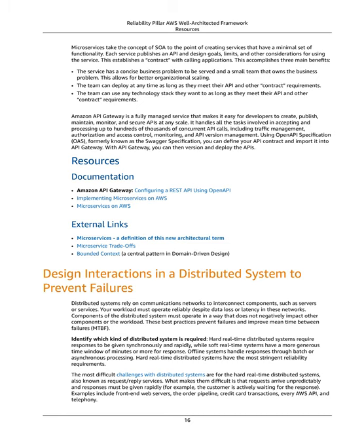Amazon API Gateway is a fully managed service that makes it easy for developers to create, publish, maintain, monitor, and secure APIs at any scale. It handles all the tasks involved in accepting and processing up to hundreds of thousands of concurrent API calls, including traffic management, authorization and access control, monitoring, and API version management. Using OpenAPI Specification (OAS), formerly known as the Swagger Specification, you can define your API contract and import it into API Gateway. With API Gateway, you can then version and deploy the APIs.